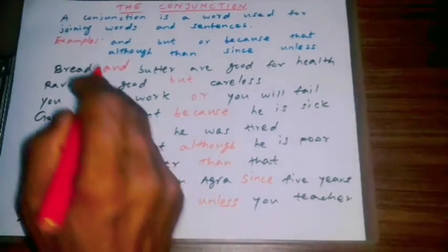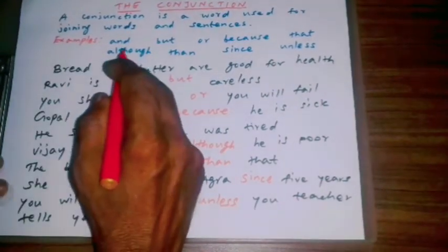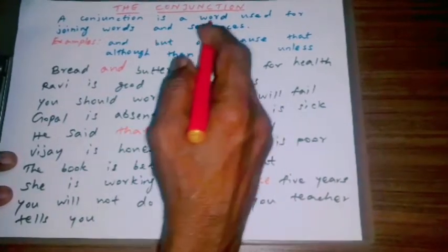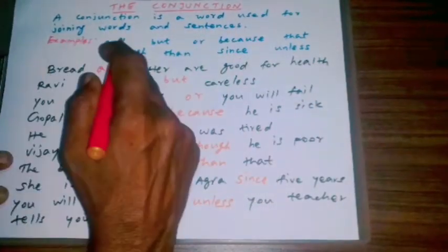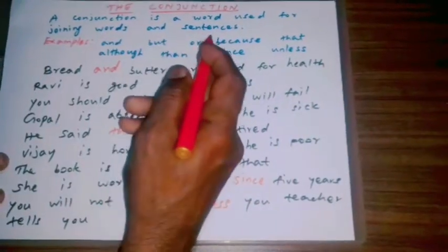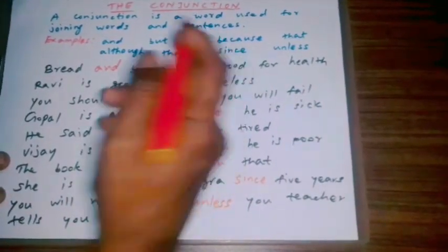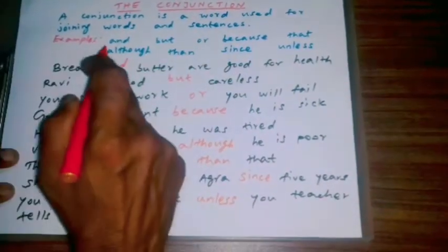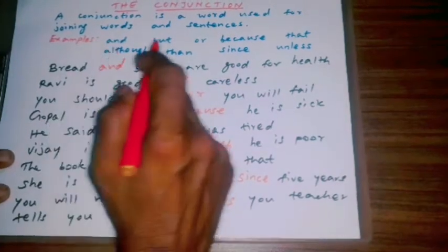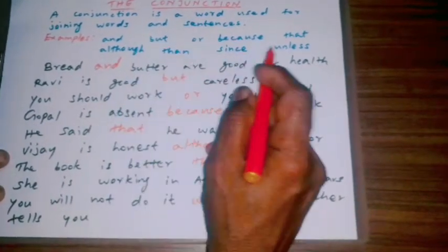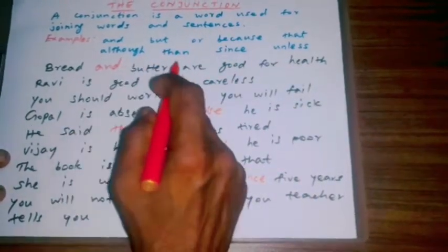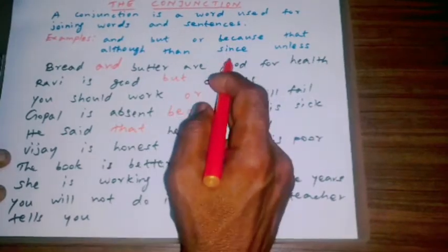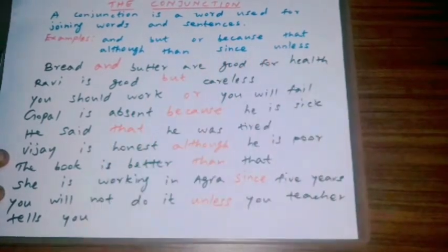A conjunction is a word used for joining words and sentences. Examples: and, but, or, because, that, although, than, since, unless.